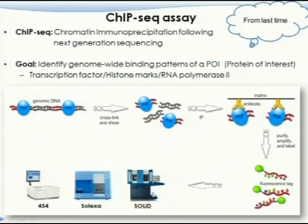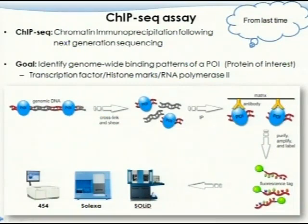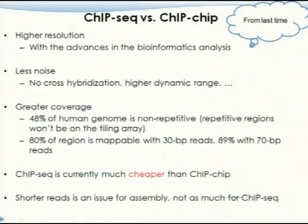You do the cross-linking, which means the double-stranded DNA will be bound to the protein, and then you break it into smaller pieces, and then you use antibodies to target this protein. After that, you sequence only those fragments, and then use bioinformatics to identify where, genome-wide, that protein originally binds.